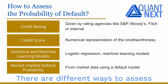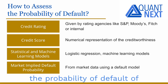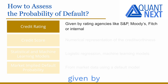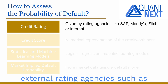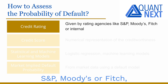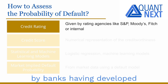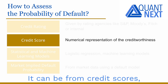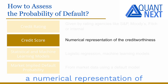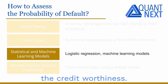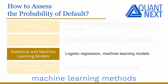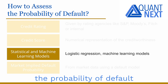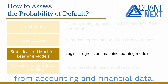There are different ways to assess the probability of default of a company or a government. It can be from a credit rating given by external rating agencies such as S&P, Moody's, or Fitch, or obtained internally by banks having developed their own credit rating methodology. It can also be from credit scores, which give a numerical representation of creditworthiness. Statistical and machine learning methods such as logistic regression can be used to assess the probability of default from accounting and financial data.